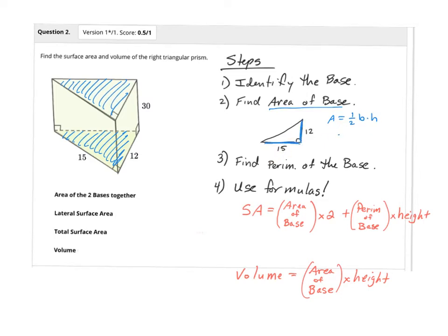If I multiply this out, one-half times 12 times 15, I get an answer of 90. That's the area of the base.